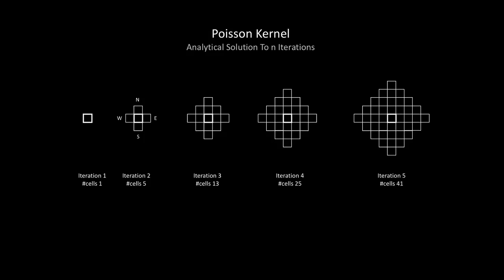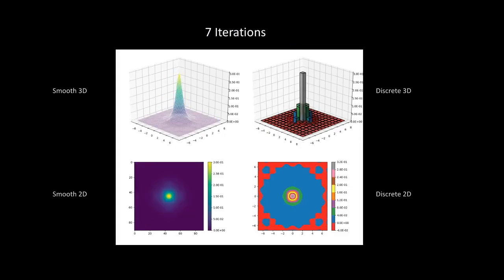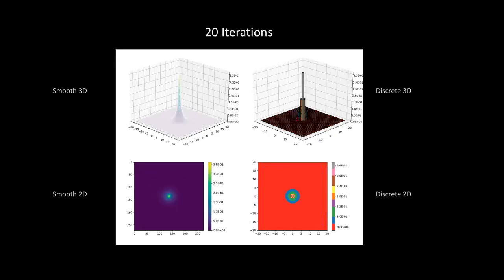For iteration three, our kernel would look like something like this. And these are different visualizations of the kernel to give you a better idea of how it looks. As the iteration number increases, we get better and more smooth approximation of the kernel.